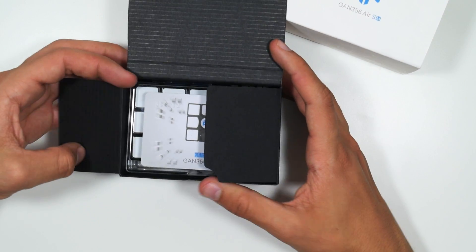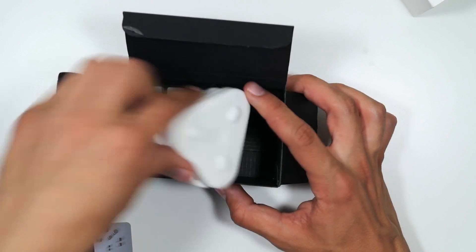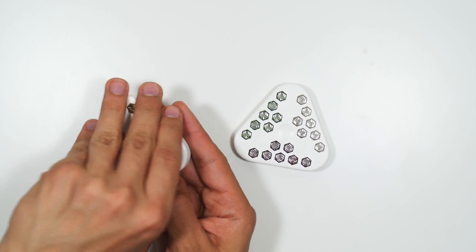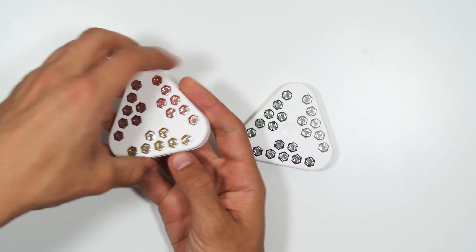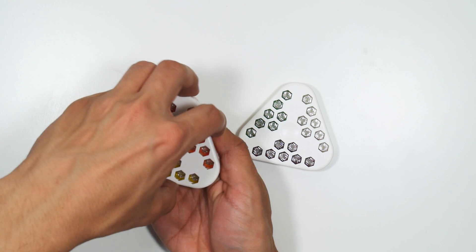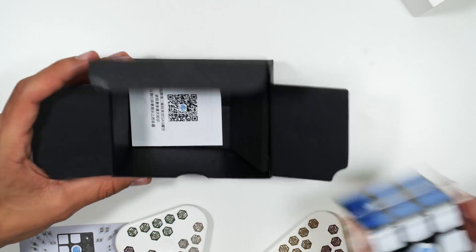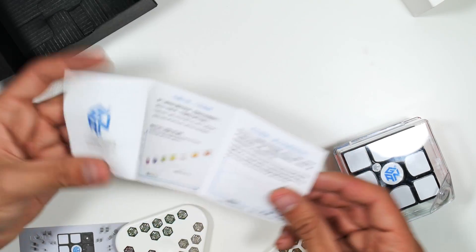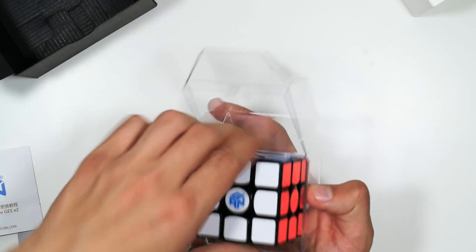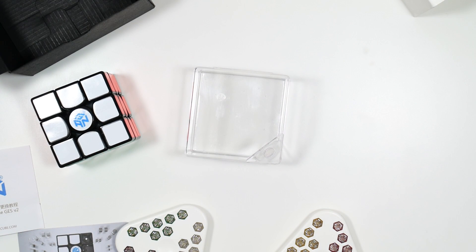Once you open the box, inside you have two sets of GES springs, which are GAN's way of tensioning the puzzle. They come in really annoying boxes and they're a pain to open up, which is probably my largest gripe, but at least they come organized in different colors. They also give you a card if you're interested in identifying your puzzle, and a manual to let you know how the GES springs work. The cube also comes in a really nice plastic box so you can carry it around. It's super nice, and overall I think this is my favorite packaging by any cube.